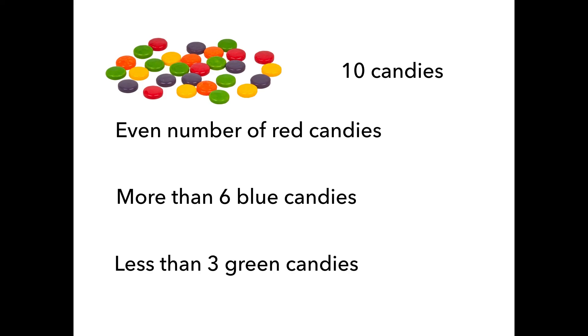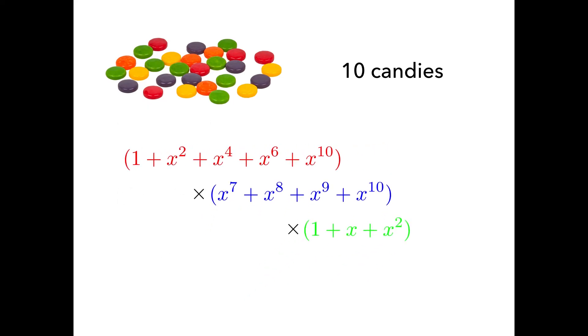So first of all, you can represent the even number of red candies as a generating function, and then the case for the more than 6 blue candies as another generating function. And finally, less than 3 green candies means this simple generating function. Now we can multiply all these generating functions to enumerate all possible cases where we can buy candies. So now we expand this formula, and all we need to do is check out what is the coefficient of x to the power of 10. This coefficient tells us how many ways there are to combine 3 colored candies.